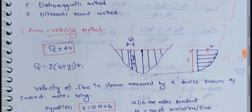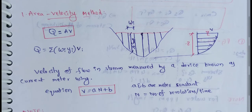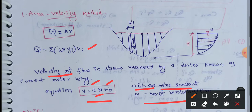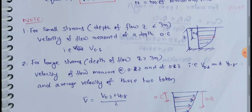The area-velocity method: Q equals A into V, or more precisely Q equals sigma wᵢ yᵢ into vᵢ. The velocity of flow in the stream is measured using a device known as a current meter, using the equation v equals a·n plus b, where a and b are current meter constants and n is the number of revolutions per unit time.